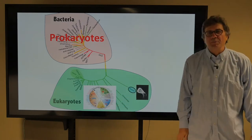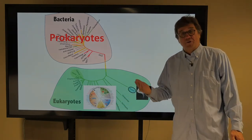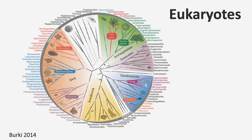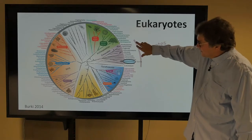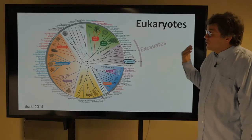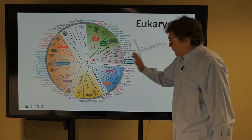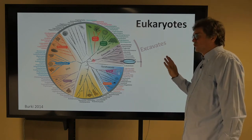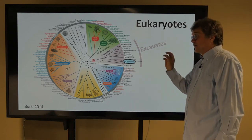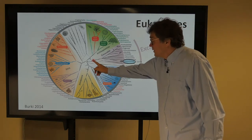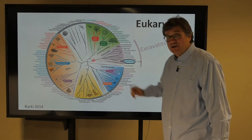Let's look a little bit more at eukaryotes before we go further. Here are all the eukaryotes, and that Giardia I talked about is right here. It is a member of this group called excavates. Now, we think that the root of the tree of eukaryotes might be here in this excavate branch.